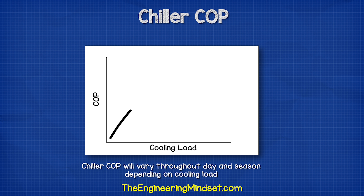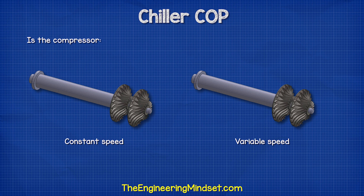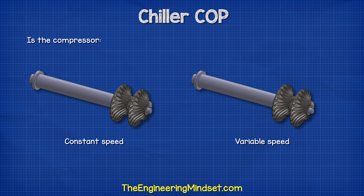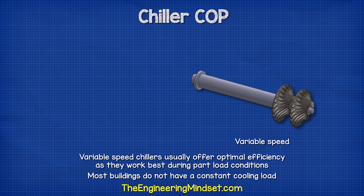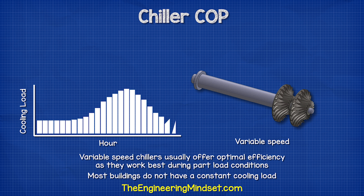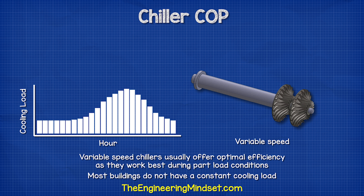The COP of a chiller will vary throughout the day and the season — it is not a fixed value unless it handles a constant load, which most buildings do not. One of the biggest impacts on these values is whether the chiller's compressor is constant or variable speed. Variable speed chillers usually offer optimal efficiency because they work best during part load conditions, and most buildings operate at part load for the majority of the year. There will only be a few days or weeks per year, usually in the summer, when the chiller is operating at full load.